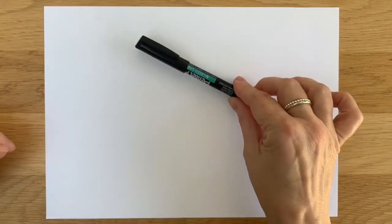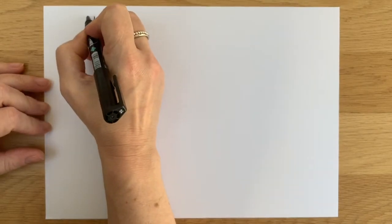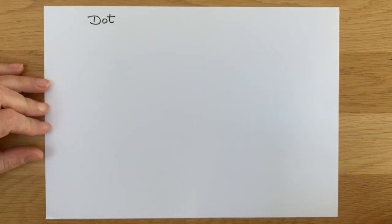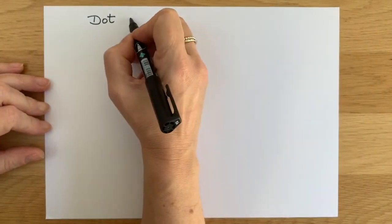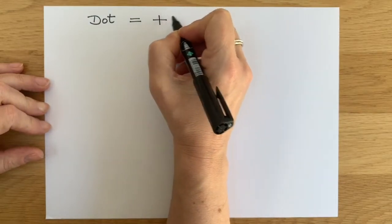Hi there! Today you're going to need paper, pen or pencil. We're going to be looking at what it means when you see a dot after a note. The purpose of a dot is to add half of the length of the note before it.